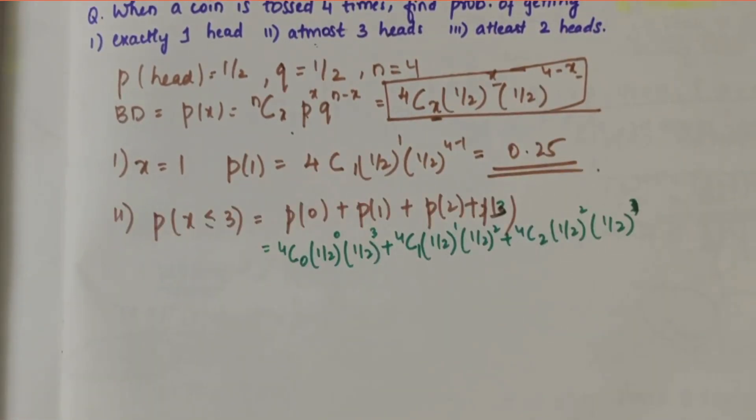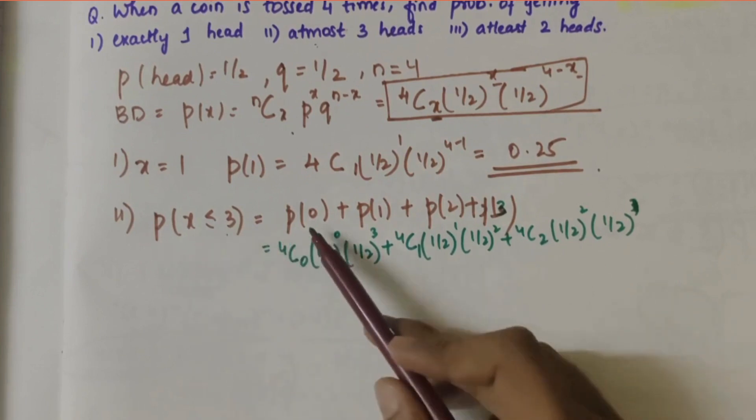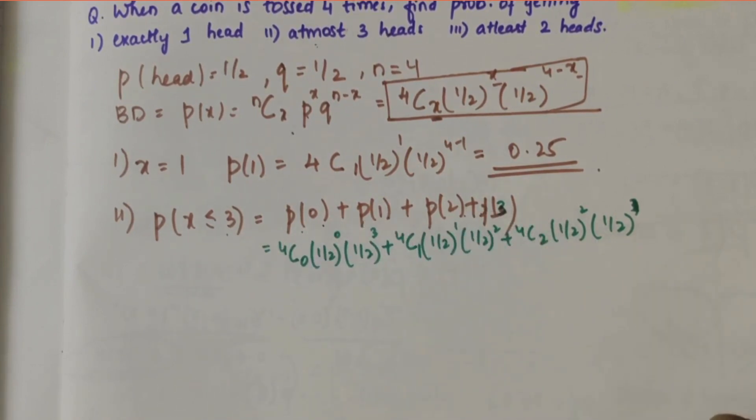Looking at the next subquestion: at most three heads. At most three heads refers to x ≤ 3, which means P(0) + P(1) + P(2) + P(3).